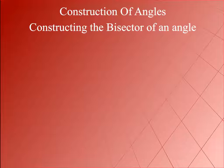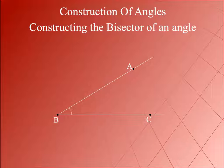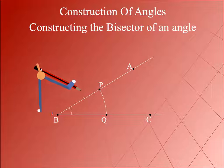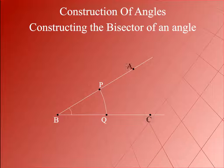Constructing the bisector of an angle. Let angle ABC be the given angle. With B as centre and any suitable radius, draw an arc intersecting the arms AB and AC at P and Q respectively.